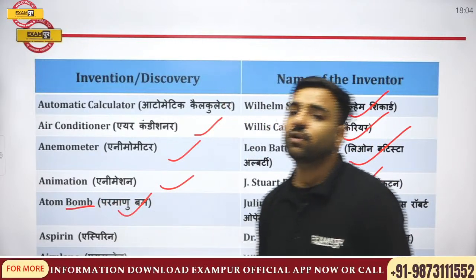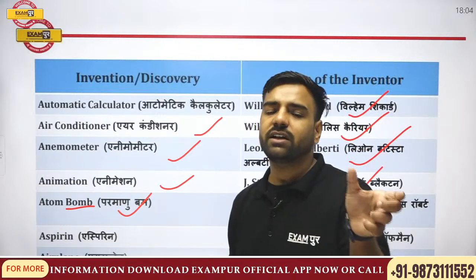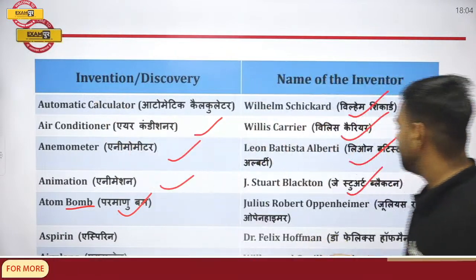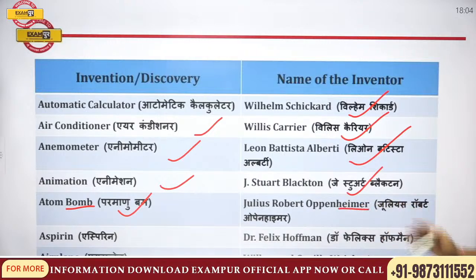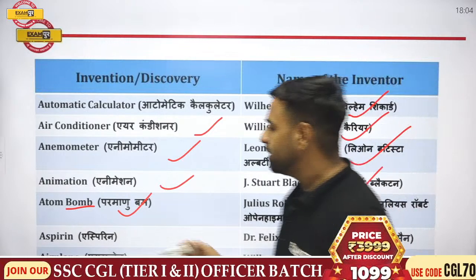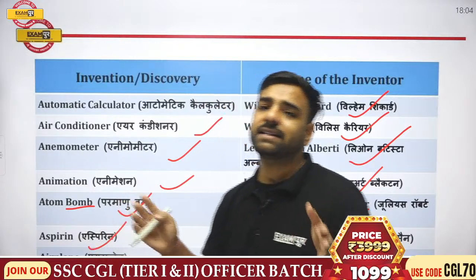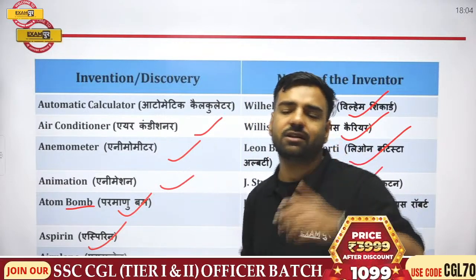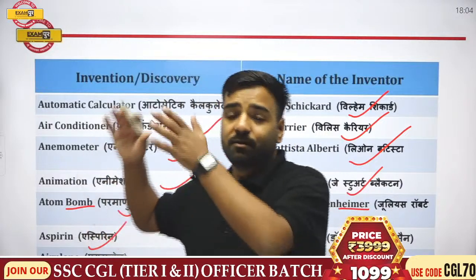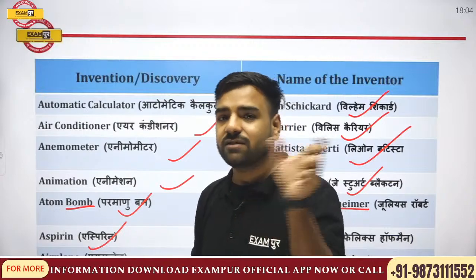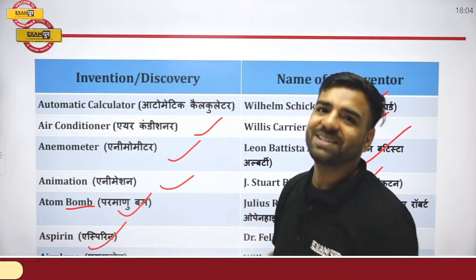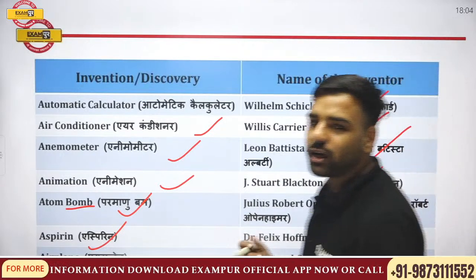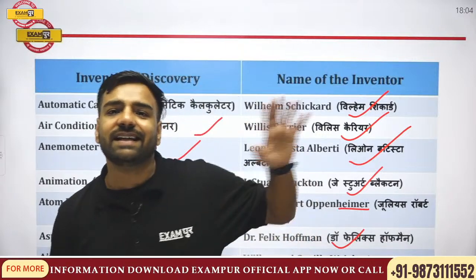Talking about the atom bomb — if a bomb blasts, many people will die. In Hindi we say 'mar jayenge,' so 'hi-mar' — the name is Robert Oppenheimer, full name Julius Robert Oppenheimer. Next, aspirin is the medicine helping us in relieving pain. The trick uses the word 'cough' — from cough we get Hoff, so the answer is Dr. Felix Hoffman.